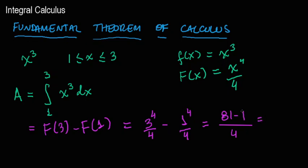This is 9 squared so that's 81 minus 1. So 81 minus 1 that's 80 divided by 4. So the area would then be 80 by 4 which is 20 units.